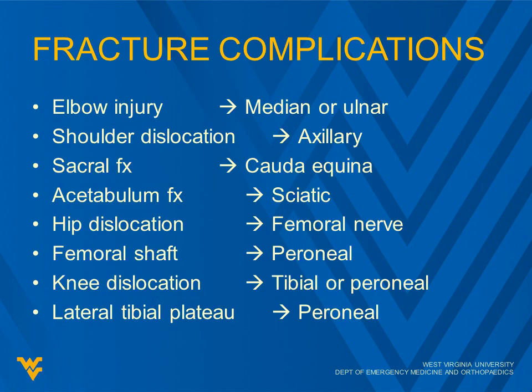Some associations: for the elbow, we're looking at the median or ulnar nerve. Shoulder dislocation — we get concerned about the axillary nerve. Sacral injuries involve the cauda equina. Acetabulum is associated with the sciatic nerve.